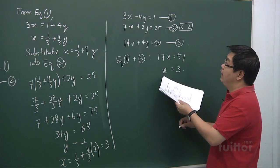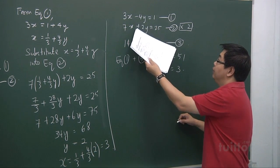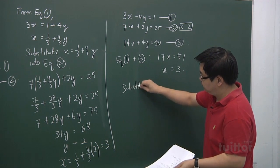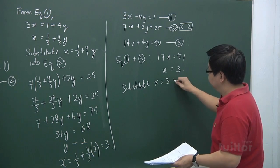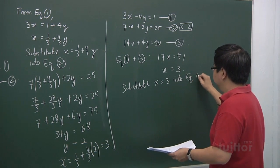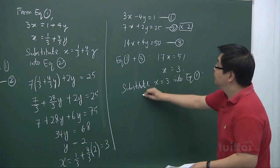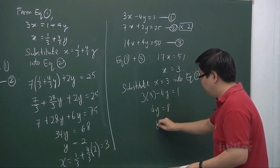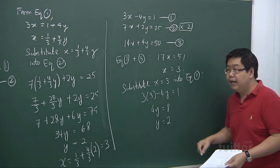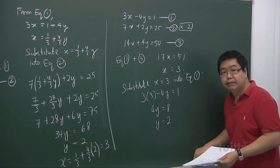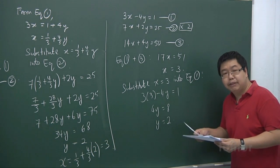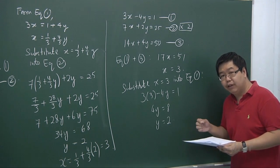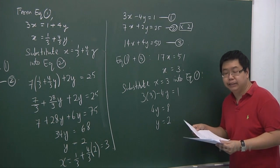Once you get the x value, substitute it back into either equation 1 or equation 2. Substituting into equation 1: 3 times 3 minus 4y equals 1, so 4y equals 8, and hence y equals 2. We still arrive at the same answer using this second method of elimination. With that, I end this video clip. In the next video clip, I'll be going through the solving of simultaneous equations where one of the equations is a non-linear equation. Thank you.